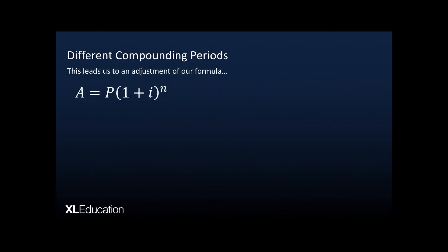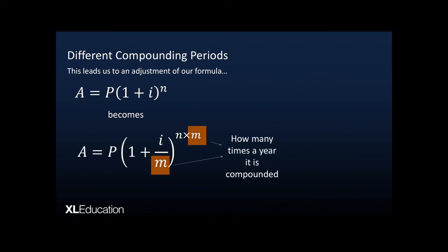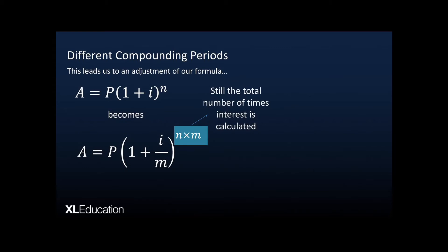This leads us to an adjustment of our formula. We've seen that A = P(1 + i)^n on the formula sheet, but in your own mind you can turn it into A = P(1 + i/m)^(n×m). Here m is how many times a year it is compounded, and i will usually be an annual interest rate. If compounded monthly then m = 12; yearly m = 1; weekly m = 52. And n remains the number of years, so n × m gives the actual total number of times interest is calculated.